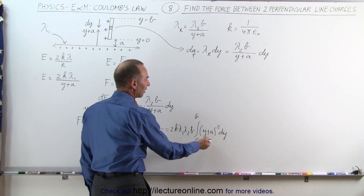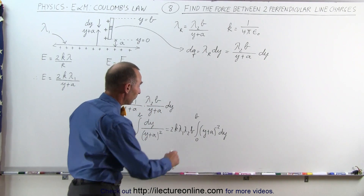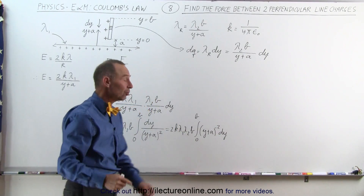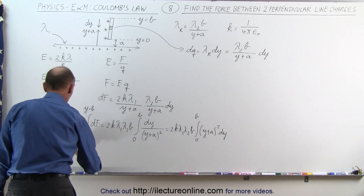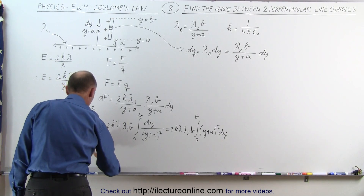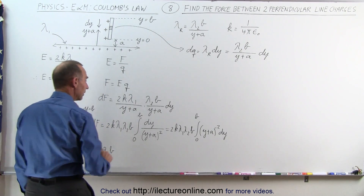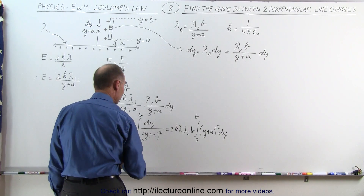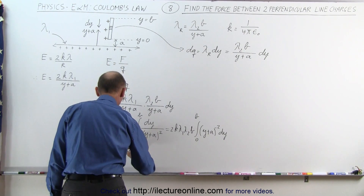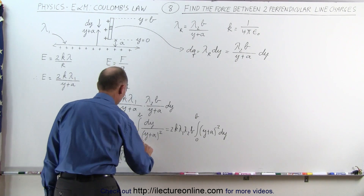This is an easy integral because we can bring (y + a)² to the numerator as (y + a)⁻². The differential of the inside is simply dy, so no substitution is needed. Integrating gives 2k·λ₁·λ₂·b times (y + a)⁻¹ divided by minus 1, which is minus 1 over (y + a), evaluated from 0 to b.